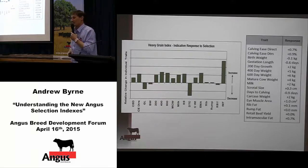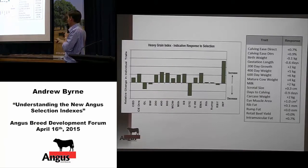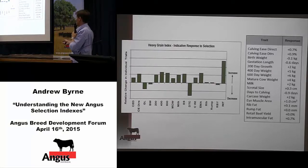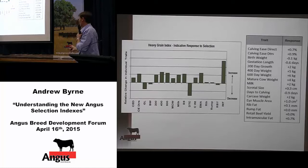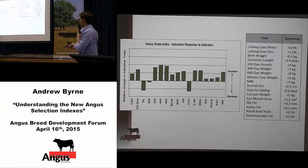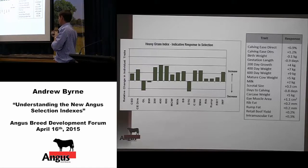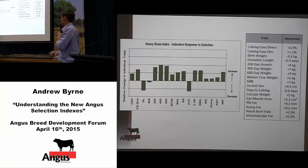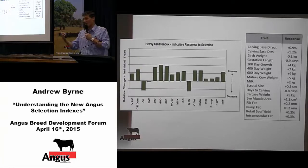The heavy grain index is fairly similar, but there is extra emphasis on marbling or IMF within that index — slightly less on growth and yield than the other indexes. So there is more focus on those traits of importance in that production system. The heavy grass index is probably the most different to the heavy grain — not quite as much IMF, allowing yield and fat. There's a bit more fat in there than the other systems under the grass-finished area, and mature cow weight also increases a little bit more than in the domestic index.